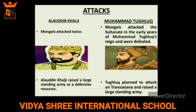Now let's compare how Alauddin Khalji and Muhammad Tughlaq dealt with these matters differently. Regarding attacks: the Delhi Sultanate was attacked twice by Mongols during Alauddin Khalji's time, and as a defensive measure he raised a large standing army. In Muhammad Tughlaq's time, the Mongols attacked in the early years of his reign and were defeated, and Tughlaq planned to attack Transoxiana and raised a large standing army for that purpose.